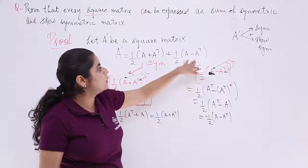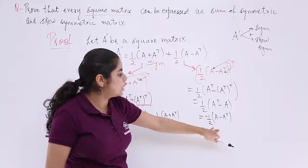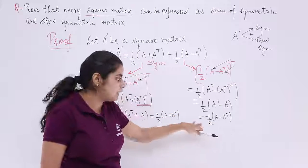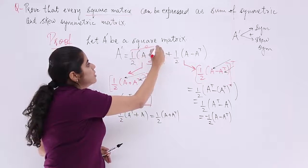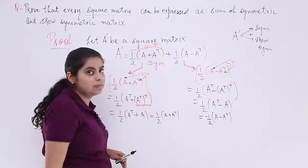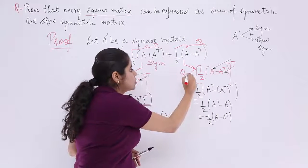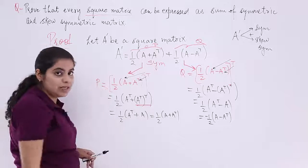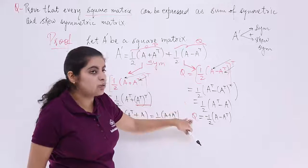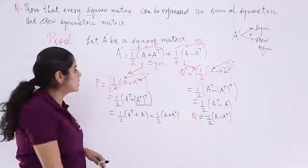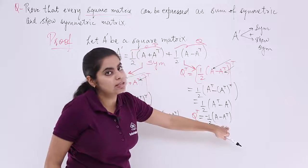So we started with half (A − Aᵀ) and obtained minus of half (A − Aᵀ). If we call the first factor P and the second factor Q, then we have found that P transpose equals P and Q transpose equals minus Q.